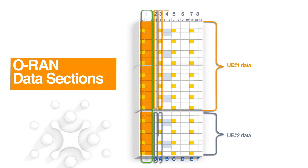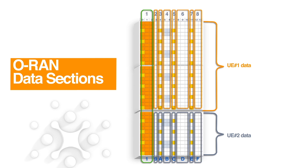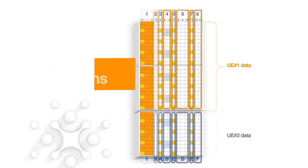Subsequent symbols may require different data sections for different user allocations over those symbols. Symbol 3 does not have any reference signal, but the beamforming to be applied on user 1 and user 2 may be different, and hence different sections need to be defined. Data sections are sent in order of the symbols — so section 2, then 9, then 3, then A, and so on.